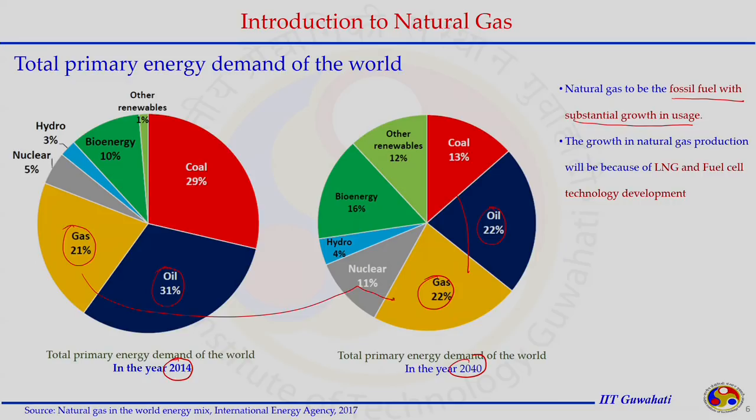Looking at the United States specifically, natural gas was contributing about 22% of total country energy need in 2000, projected to reach 25% by 2010. Because of the exploration and utilization of unconventional energy resources, more than 25% of the US energy requirement is now being fulfilled by natural gas.